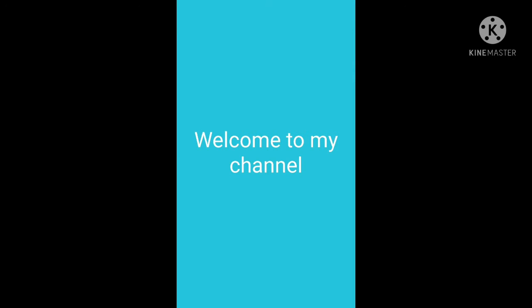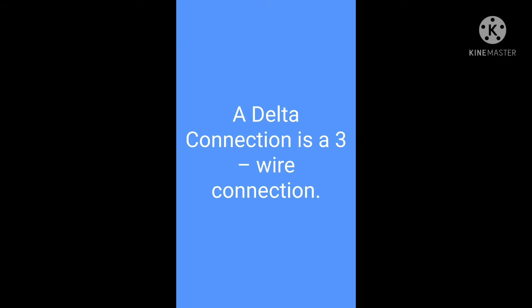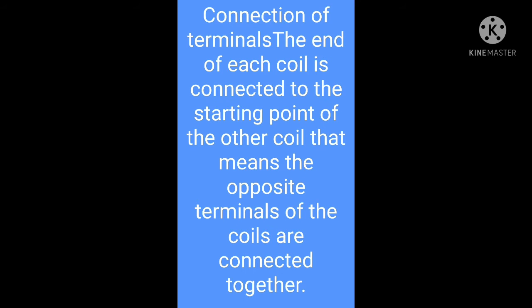Hello friend, welcome to my channel Knowledge Everything. In delta connection there are only three wires for distribution, and all three wires are phases — no neutral in delta connection. You can see the photo: a delta connection is a three-wire connection. The three wires are R, Y, and B — three phases, no neutral level.